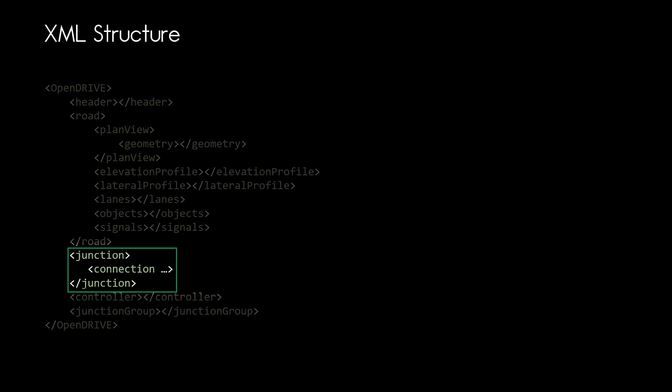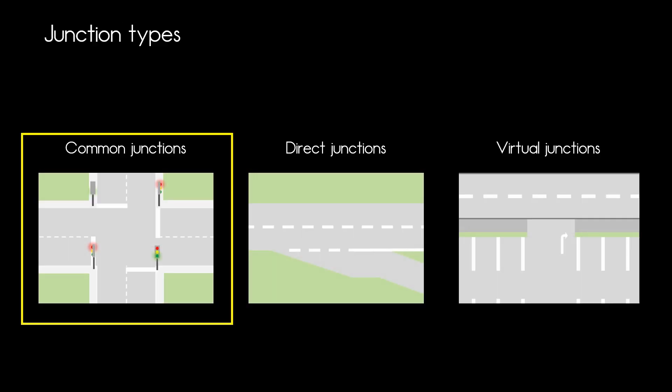But before we dive deeper into a junction, let's see what types of junction OpenDrive lets you define. There are three types of junctions available in OpenDrive: common junctions, direct and virtual junctions. You can model everything with common junctions.